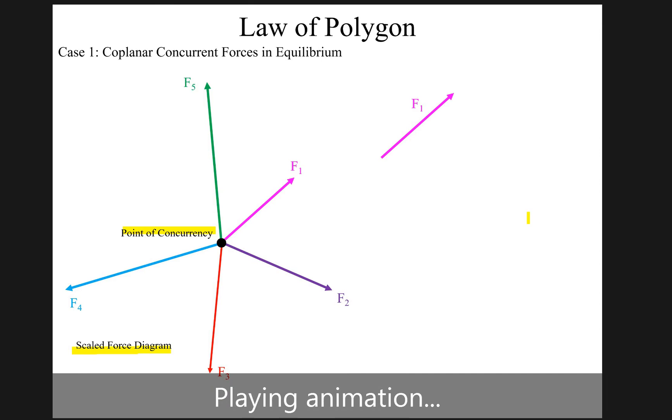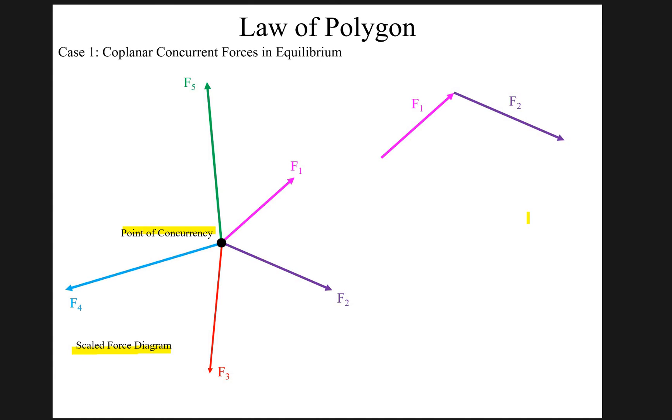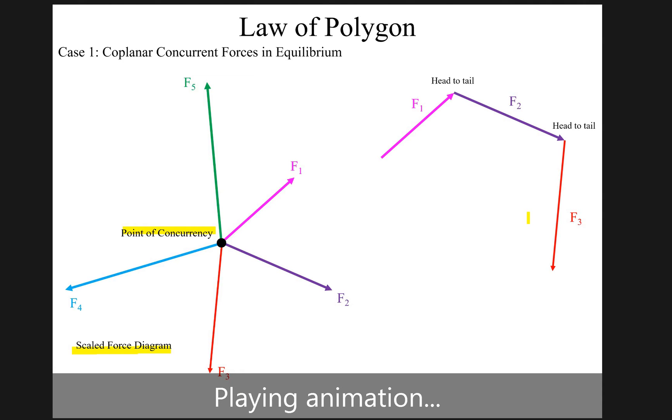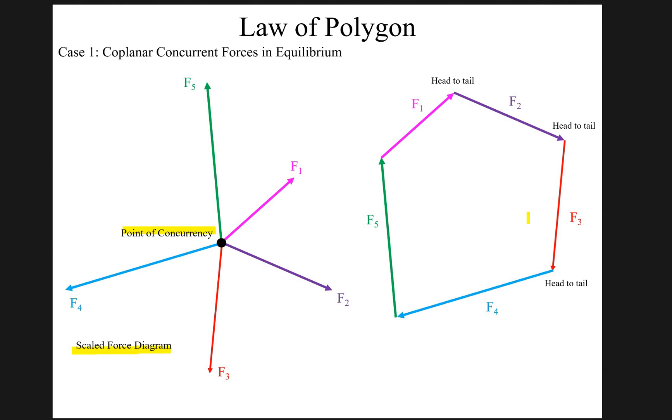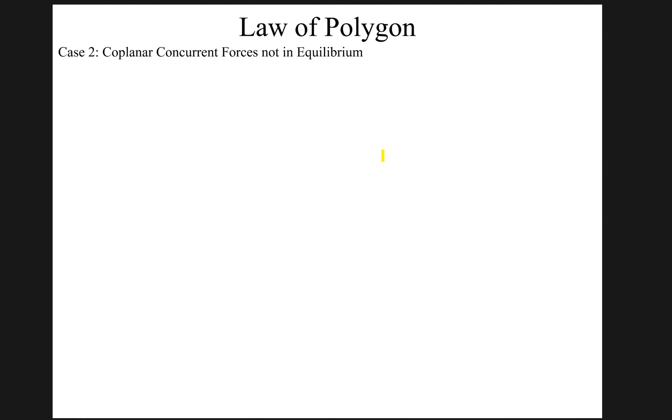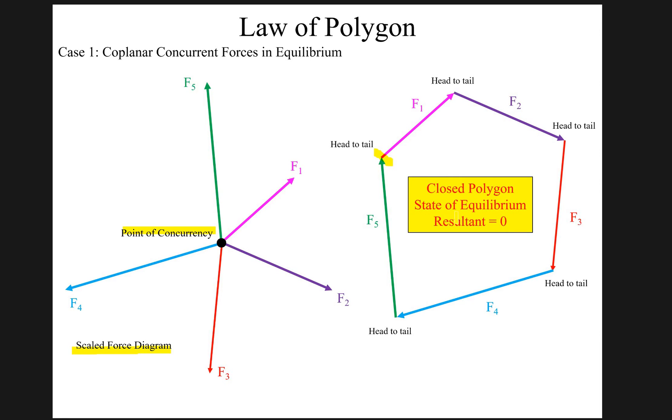From this scaled force diagram, a polygon is to be formed. In this case the polygon is closed. F5 and F1 both are coinciding at point. There is no open space, which means the system is stable. So in this case when the system is stable, it means the resultant is zero, it's equal to zero.